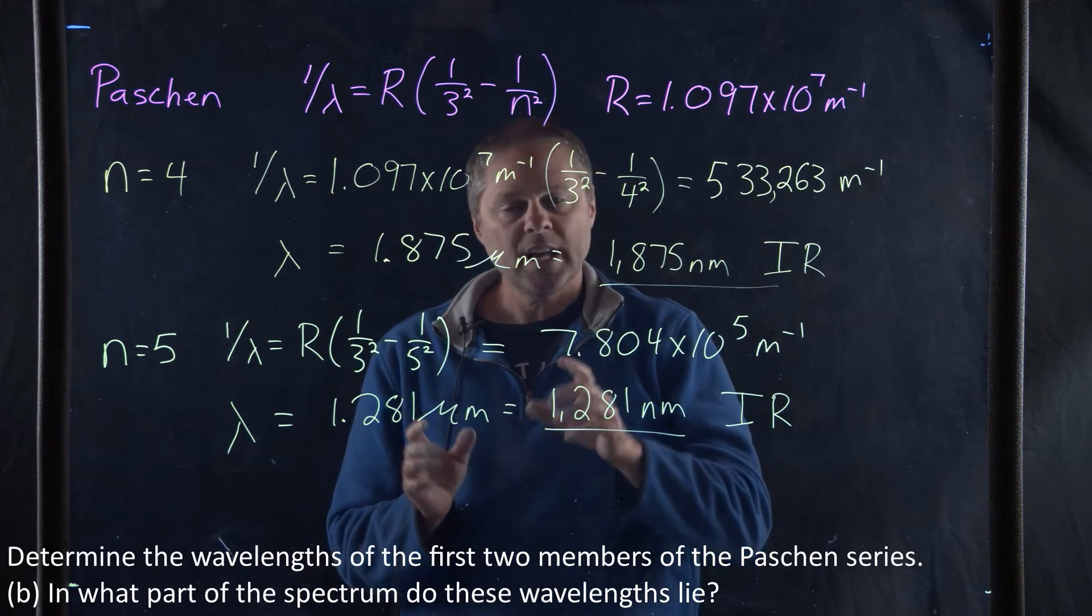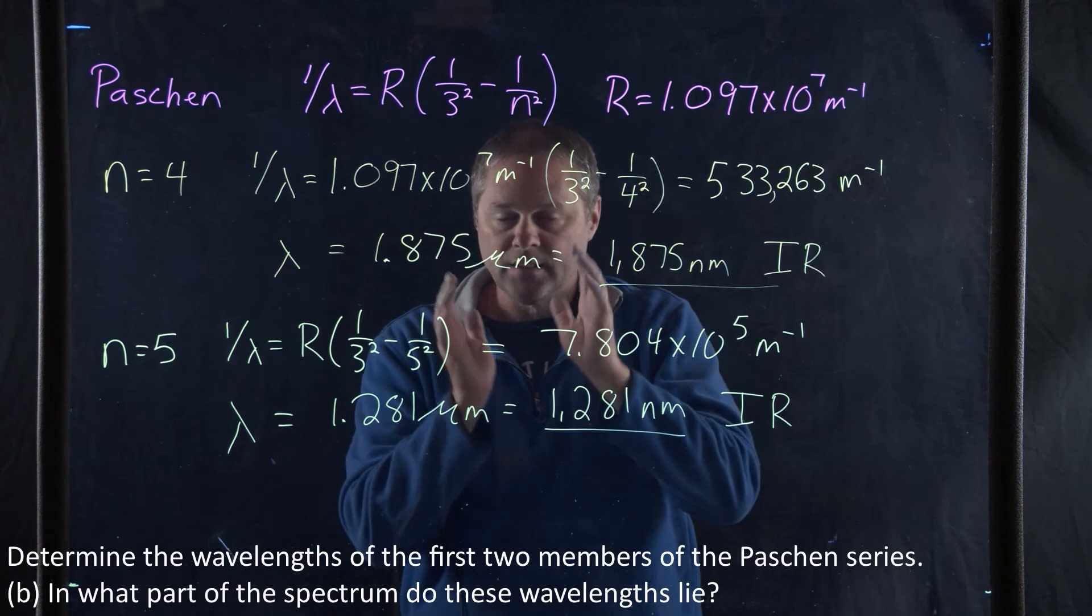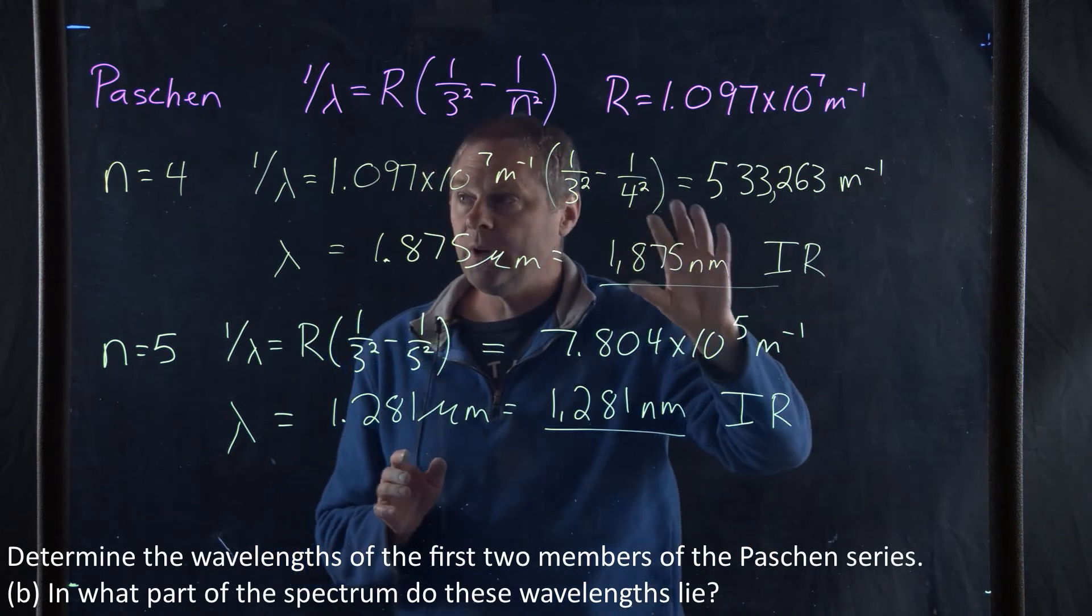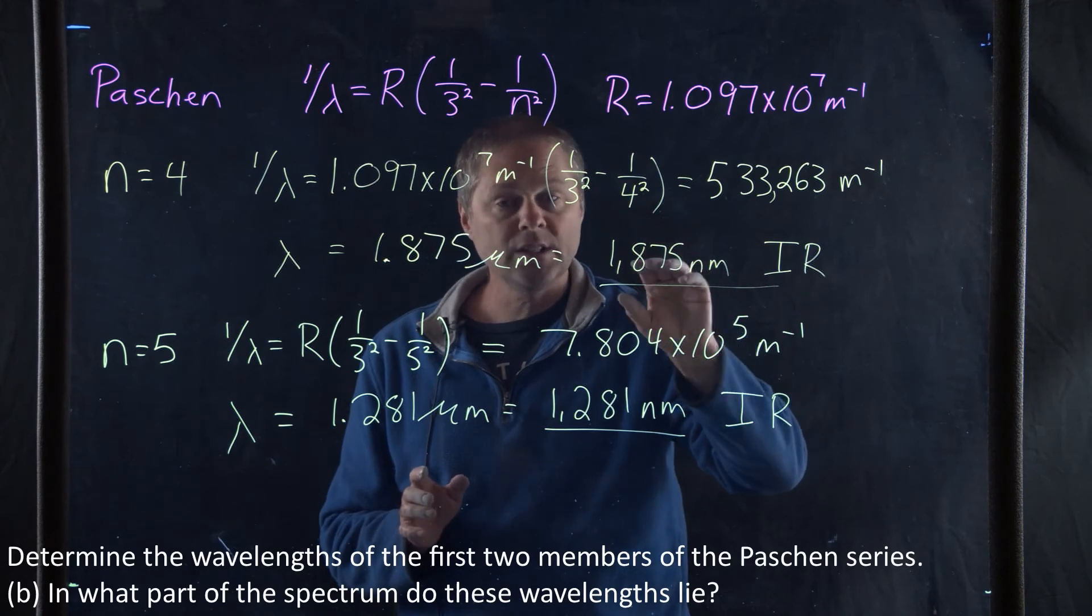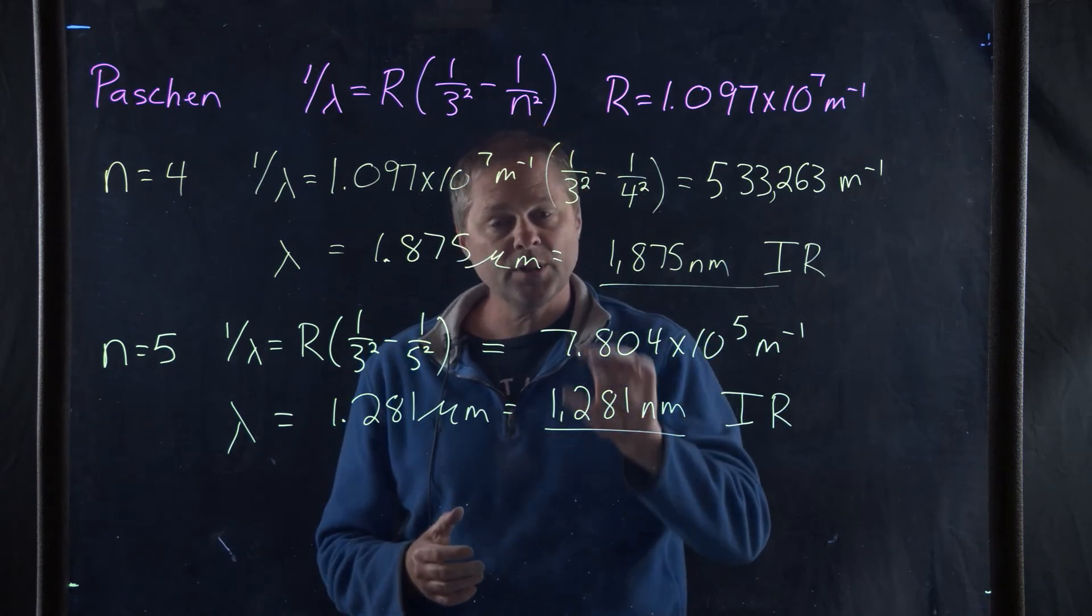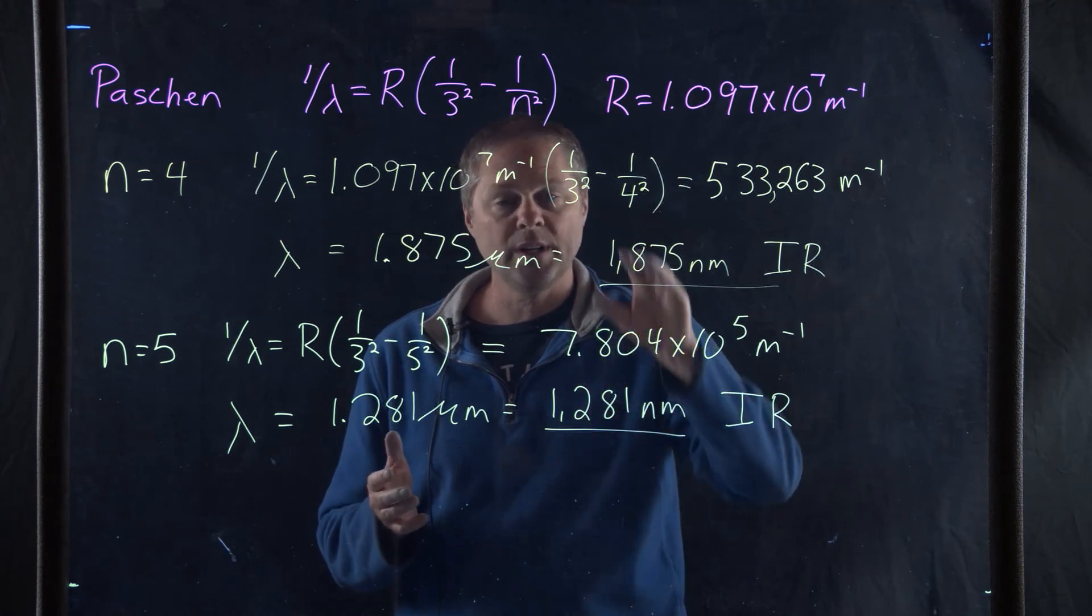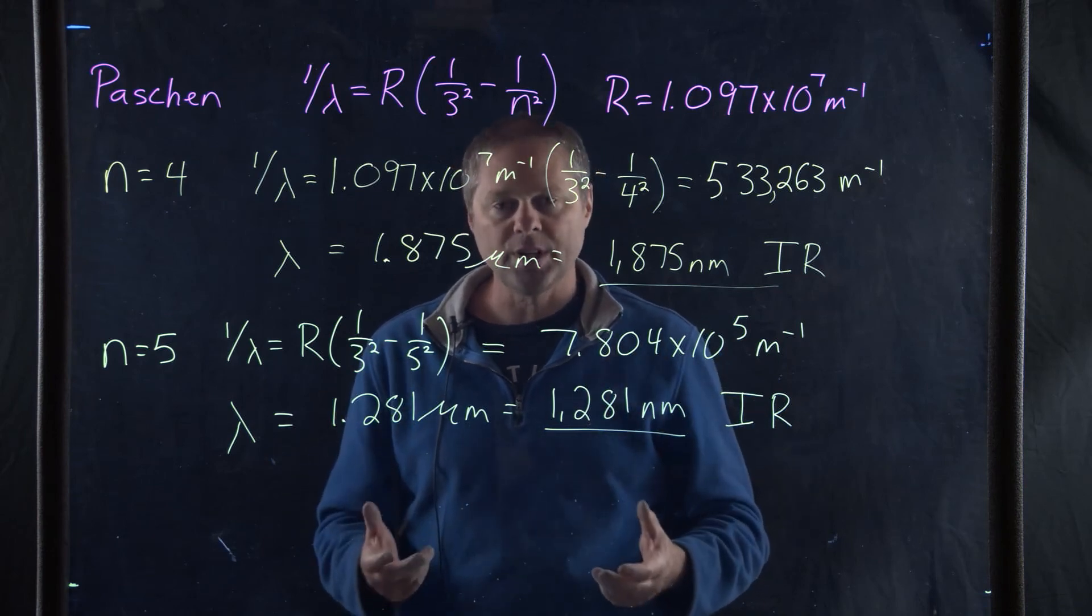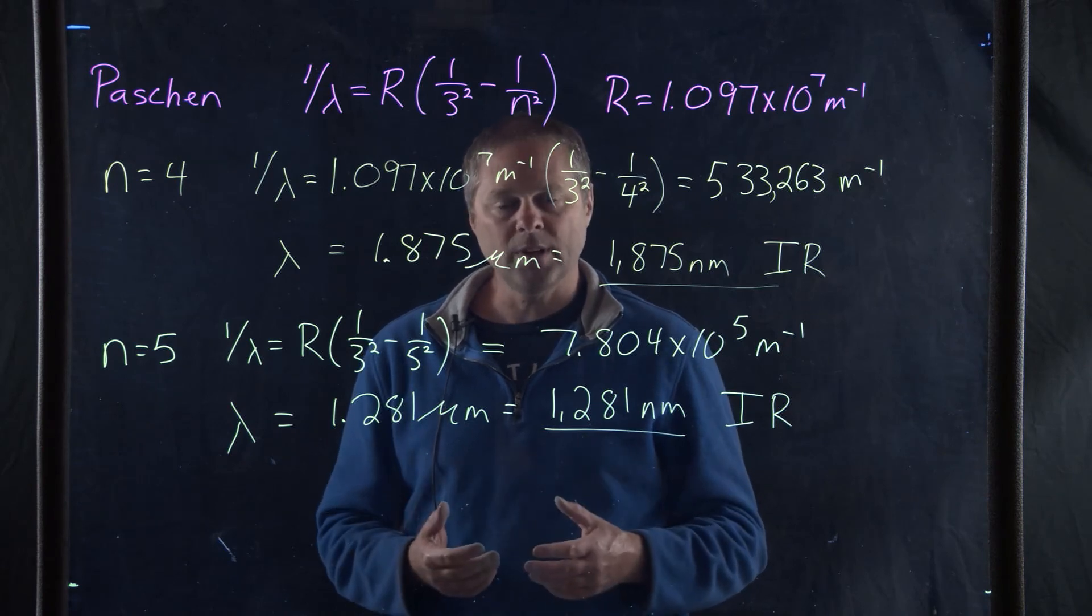What you can see here is these levels are getting closer and closer together. Three and four are going to be closer than three and five, thus the increase in wavelength or decrease in energy. The distance between the 5th orbit and 3rd orbit is greater than the distance between the 4th and 3rd, thus the decrease in wavelength or increase in energy of the photon emitted. If you have any questions, please let me know.